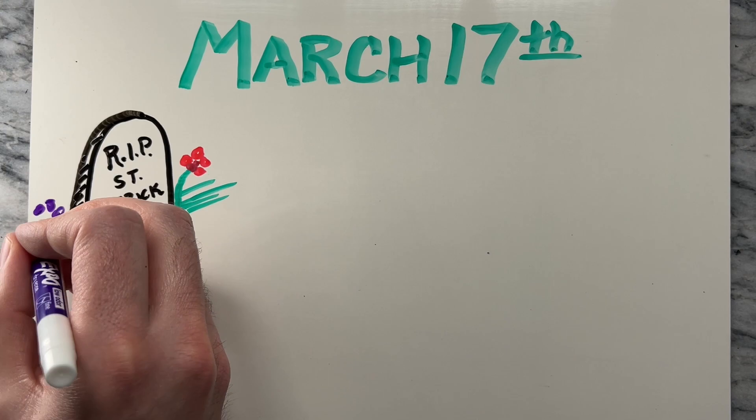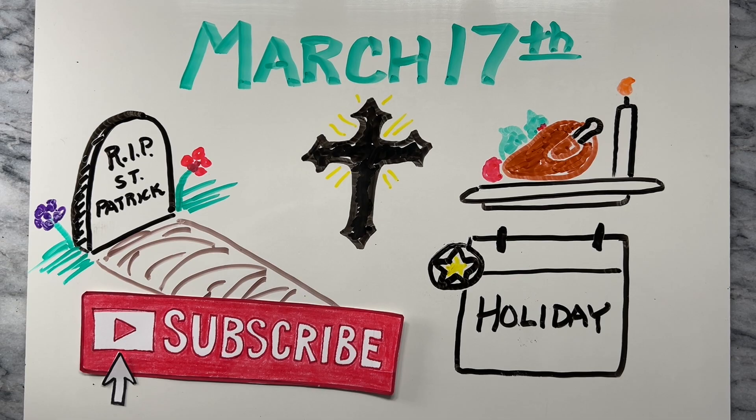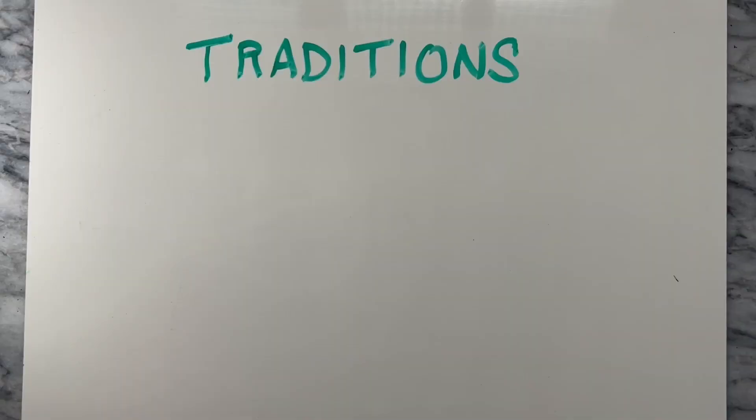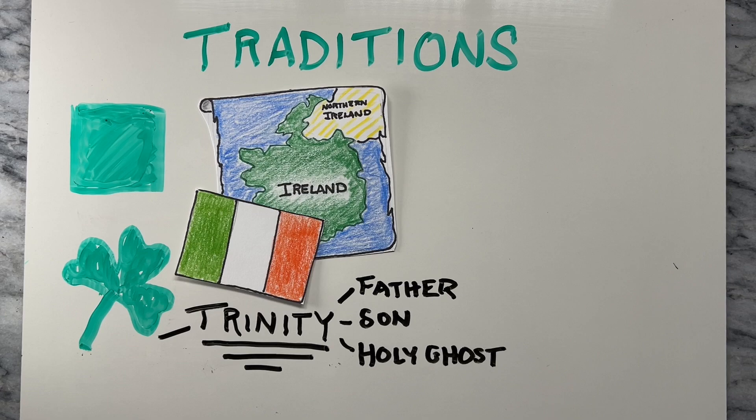The holiday became an official feast day in the Catholic Church in the early 17th century and has since become a popular secular holiday as well. The traditional color of St. Patrick's Day is green, which is associated with Ireland and the shamrock, a symbol that St. Patrick used to explain the concept of the Holy Trinity to the Irish people. The holiday is also associated with drinking and parades, which are thought to have originated in the United States in the mid-19th century.